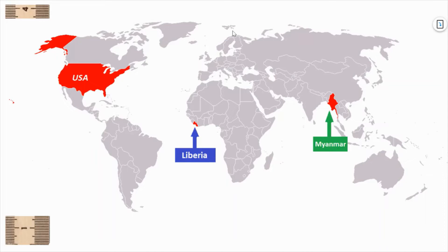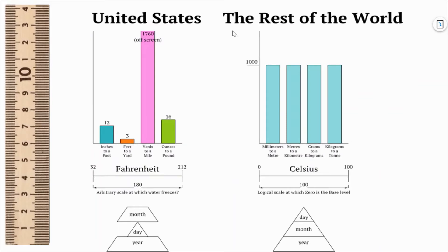This is the way the US measures things: inches to a foot, feet to a yard, yards to a mile, ounces to a pound. It's so random the way we measure things. Fahrenheit is also very random. One of the things I like about the metric system is that Celsius is very organized, and even the way we do month, day, and year makes a big difference. On the left it's really unbalanced when it comes to the US.